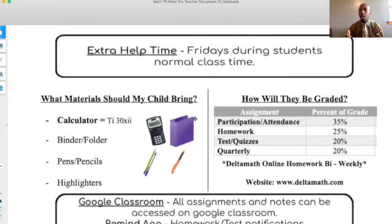How will your child be graded? They'll be graded 35% going to attendance and participation. Homework, 25%, testing quizzes, 20%, and a quarterly at the end of the quarter, which is going to count for 20% of their grade. Delta Math is our online homework website that I use, and they get homework on there bi-weekly, which is every two weeks. The website is www.deltamath.com, and it's the same login they will use to get into their Google Classroom.